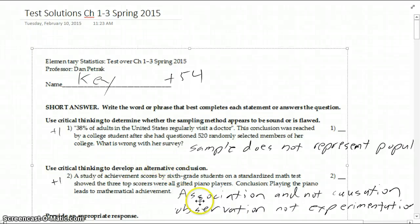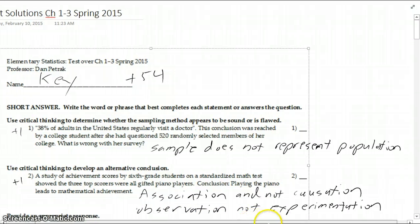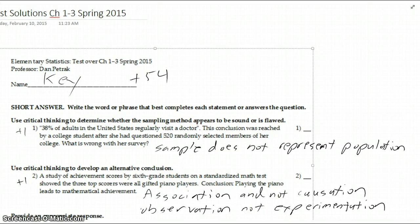Hi, this is Dan, and this is a video solutions to chapters 1 through 3, spring of 2015. Very good results on this from my online sections. I had like 11 A's, 11 B's, I think 5 C's, and 1 F.